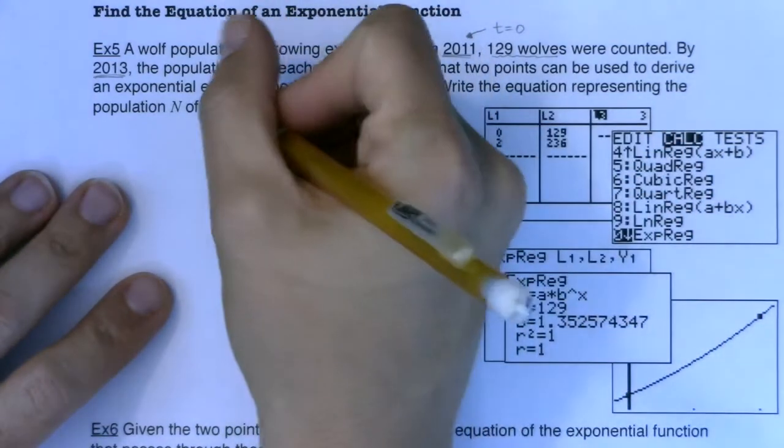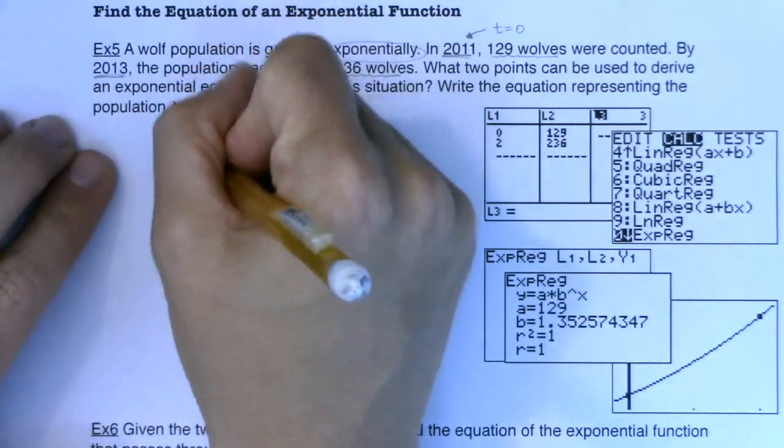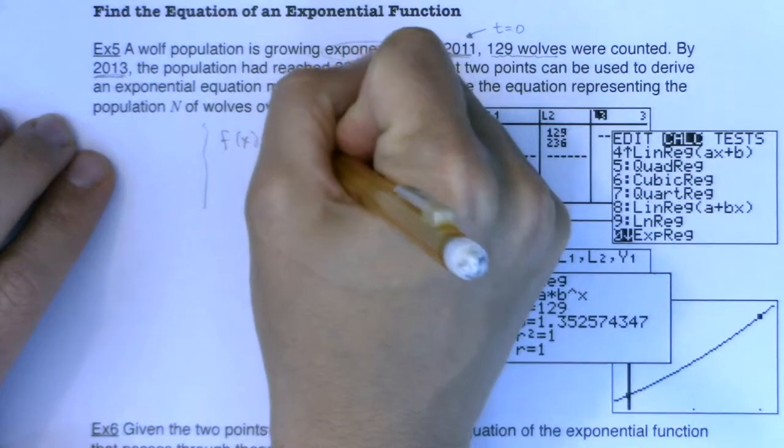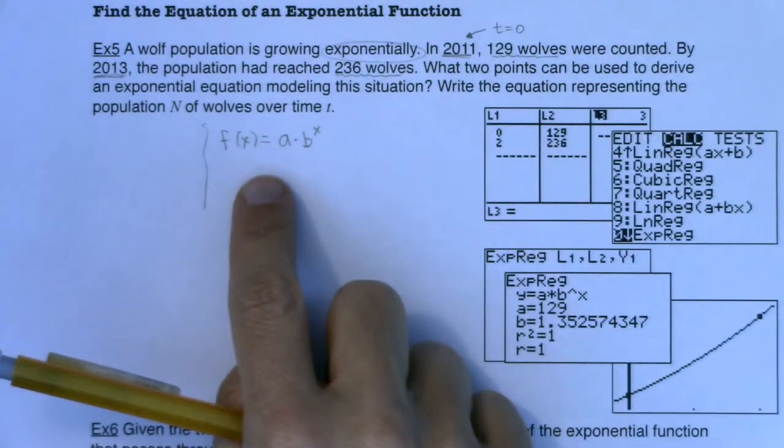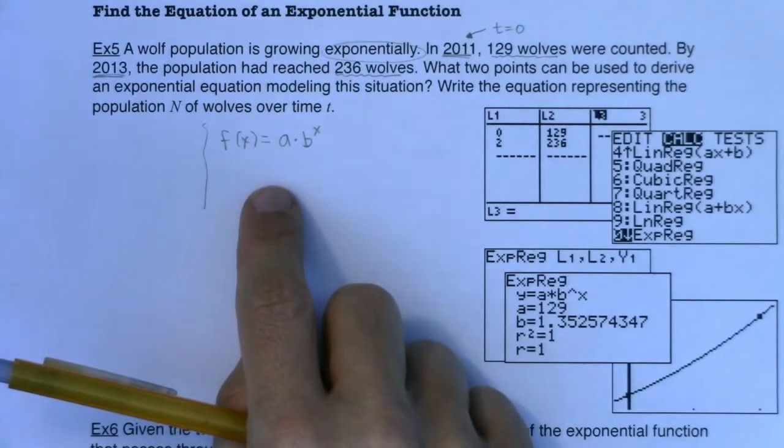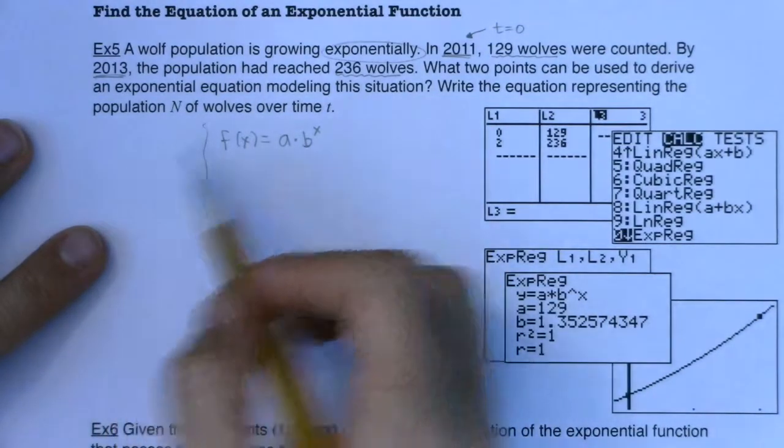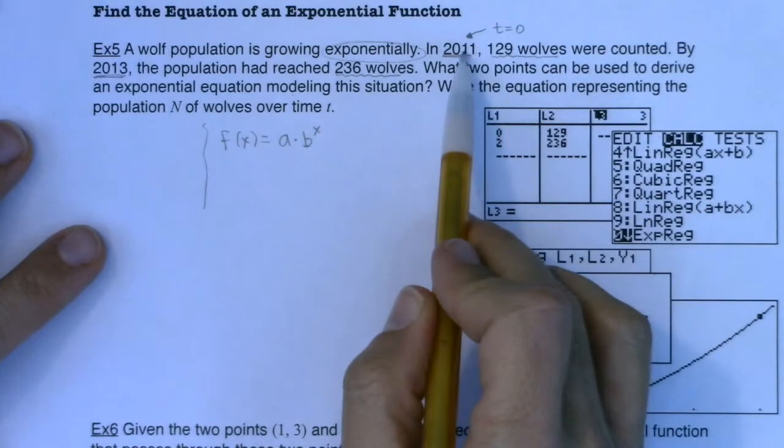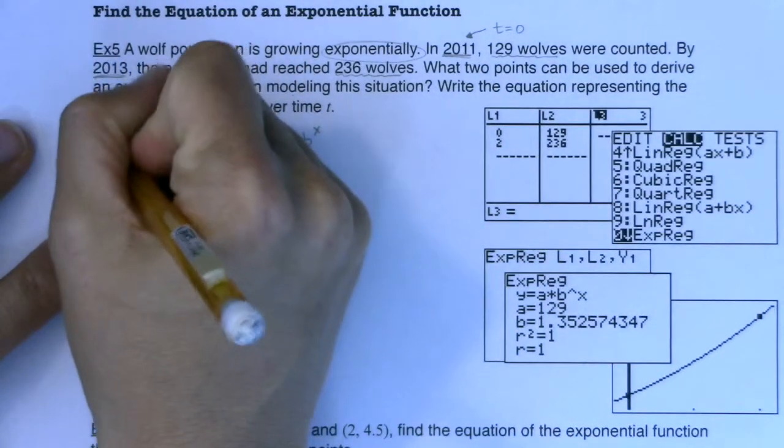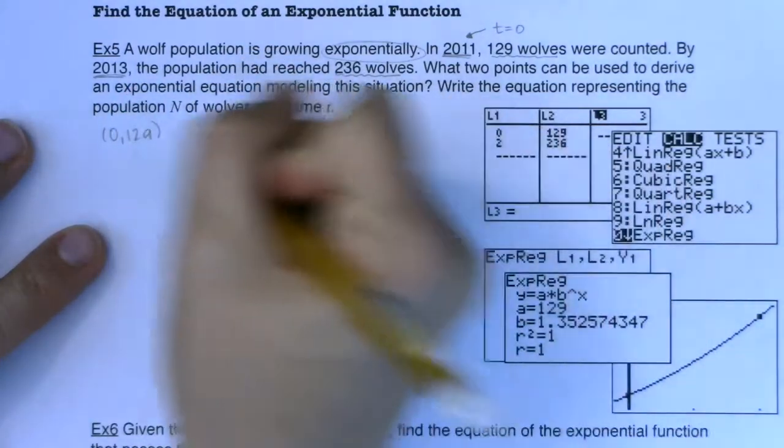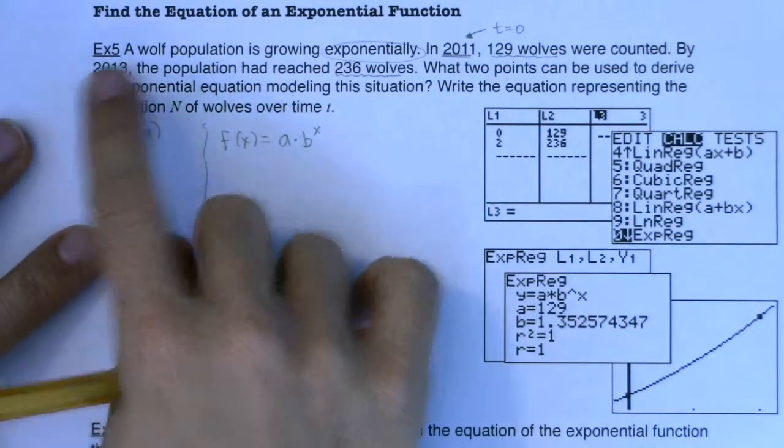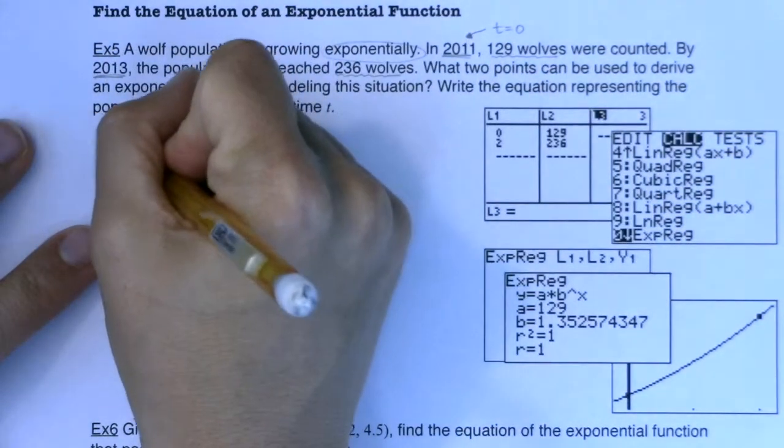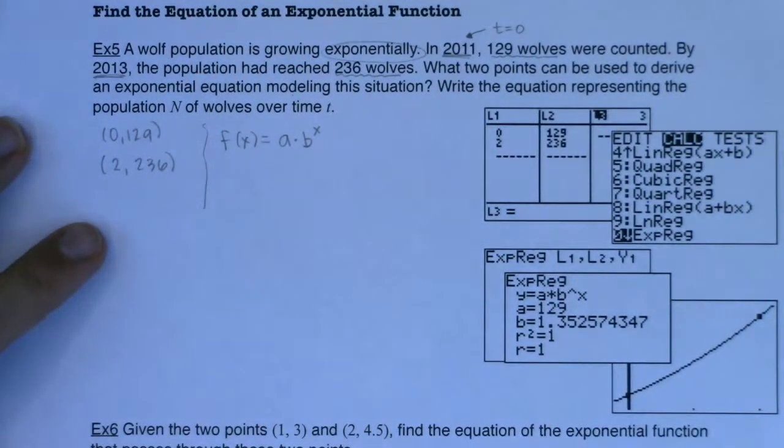And when we say model, we're going to use that equation. I'm going to draw a little separator here. We want to use that equation that we saw in example four, where we're going to do a times b to the x. And I'll eventually swap out the letters with n and t. But this is your basic exponential model. Now, the reason I put a little separator here is because our initial question said, what two points can be used to derive this exponential model? And the two points I see, they're (0, 129). And I also have, well in 2013, t would be equal to 2. So I have year 2 and my population had grown to 236 wolves.